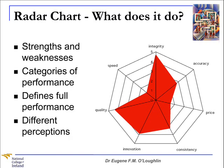What does a radar chart do? Well, it makes concentrations of strengths and weaknesses much more visible, as you can see on the sample diagram here. It clearly displays the important categories of performance. And if it's done well, it clearly defines full performance in each category. It captures the different perceptions of all the team members about an organisation's performance. And it's a good way to answer the question: how are we doing?